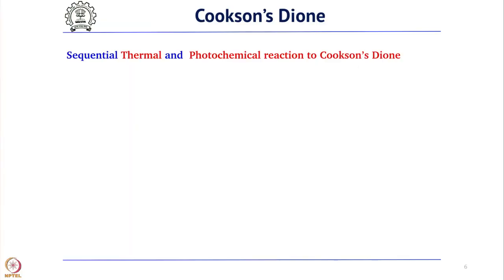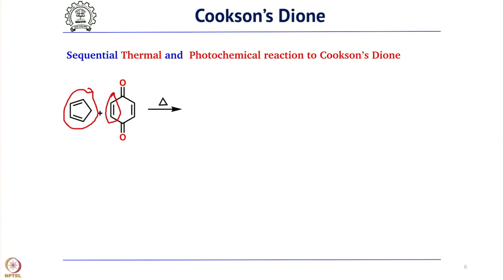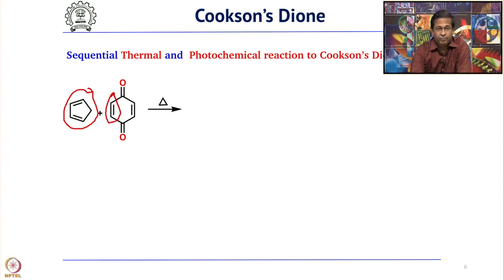Cookson Dione involves a sequential thermal and photochemical reaction done in 2 steps, starting from cyclopentadiene and benzoquinone. Cyclopentadiene is the diene, and the double bond of benzoquinone is the dienophile. This undergoes a 4+2 cycloaddition reaction to give a bicyclic adduct — in principle a tricyclic adduct.